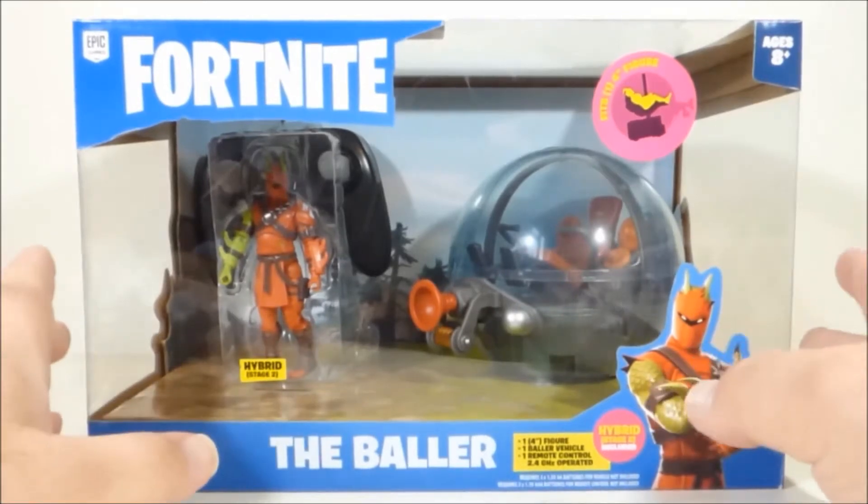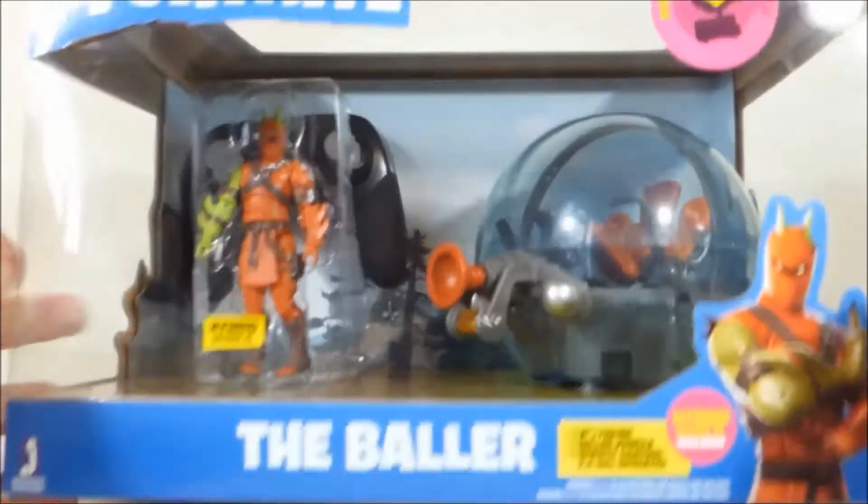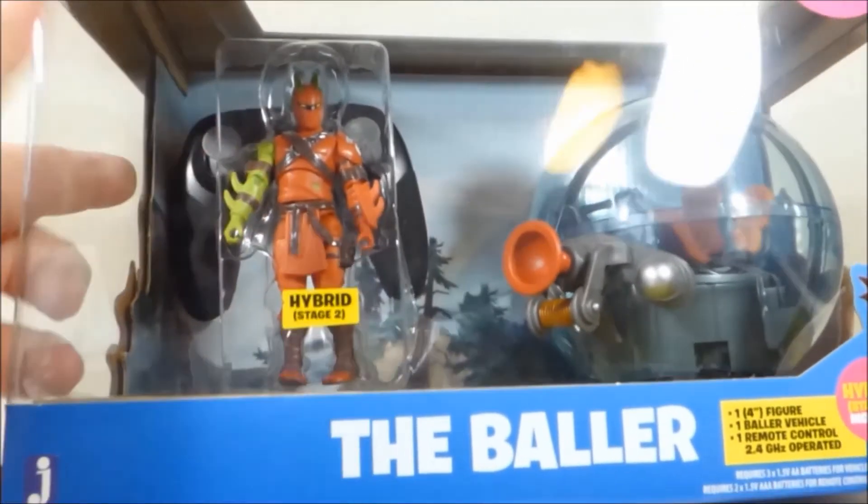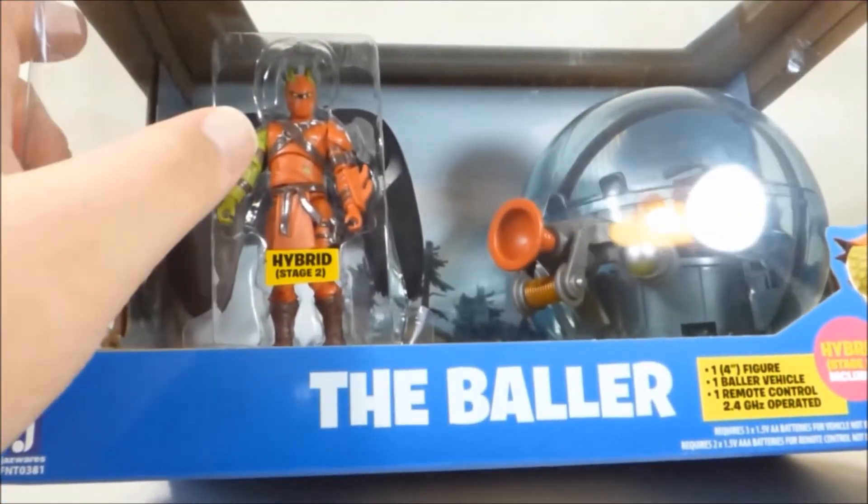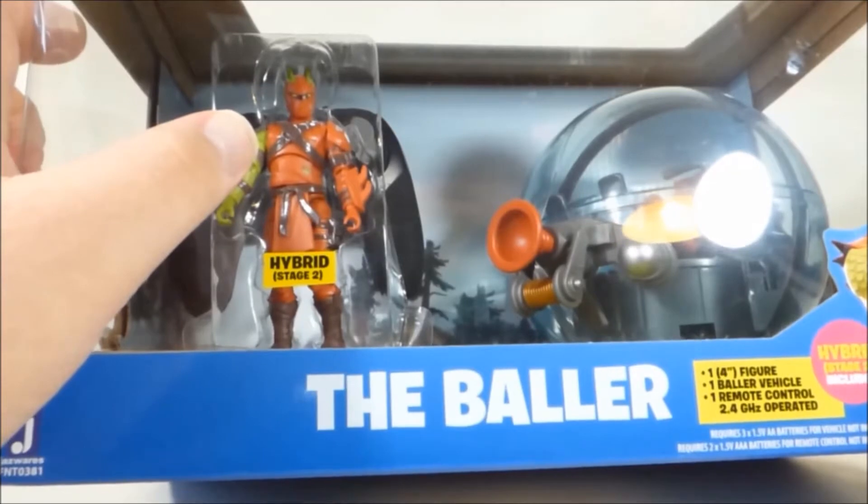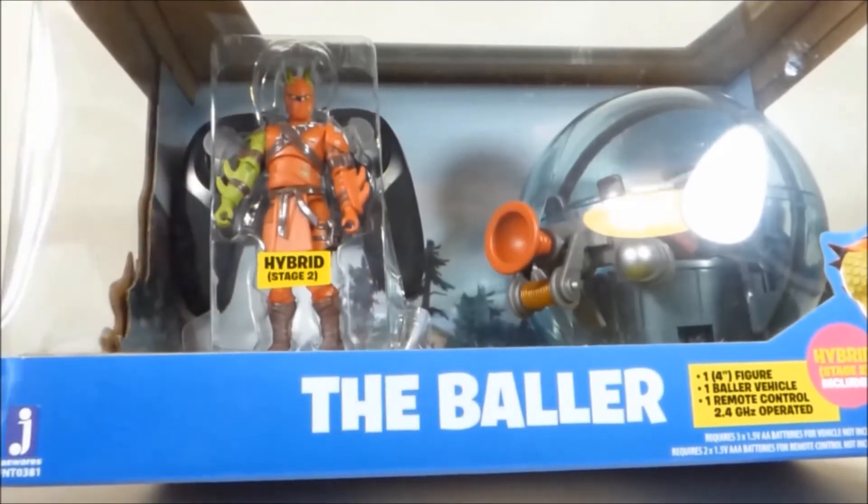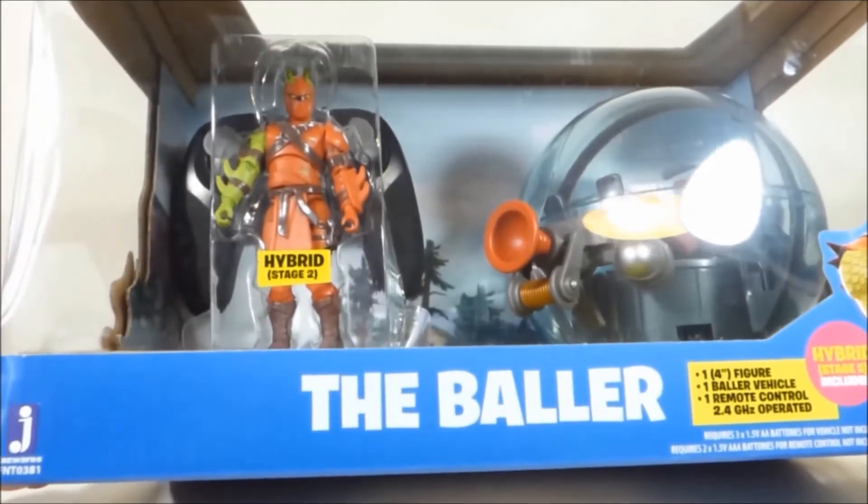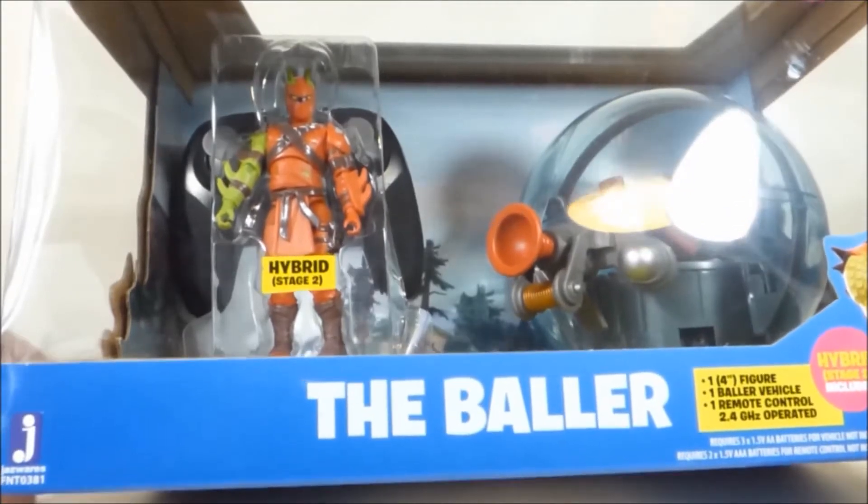So I'm glad that this has seen a release in some form. I'm just going to take a look at what you get inside. You get the Baller vehicle, the remote control, and one figure which is Hybrid Stage 2. Hybrid was a dragon ninja character introduced in Season 8 as well, who hatched out of an egg that was under Polar Peak at the time and was released after being nurtured in a volcano.